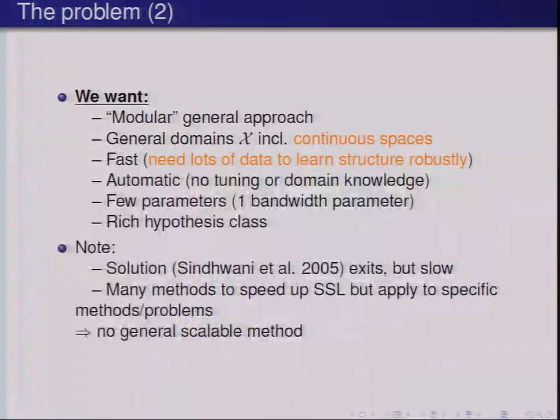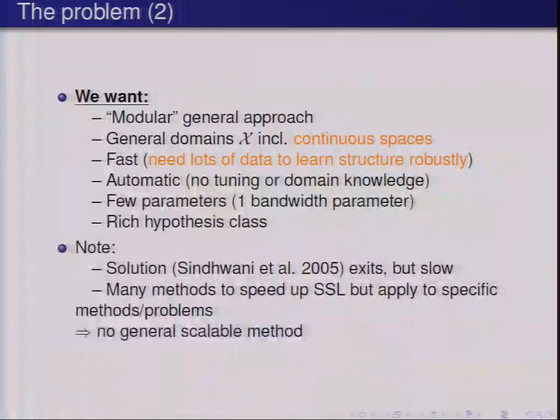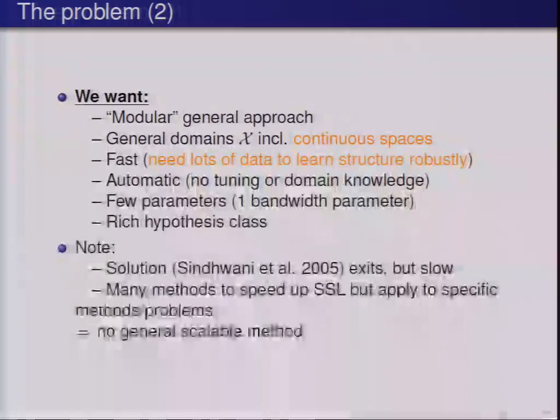We have a checklist of things we want to achieve. We want a modular, general approach applicable in lots of different areas and algorithms — kernels are very general and can be modularized across various domains. We want it to apply on very general spaces, including continuous spaces. We'll do it quickly, because learning structure often requires a lot of data to do robustly. We want to use lots of data efficiently. We want it to be very automatic, with no excessive parameter tuning or domain knowledge. Ideally, just a single bandwidth parameter to define a rich hypothesis class.